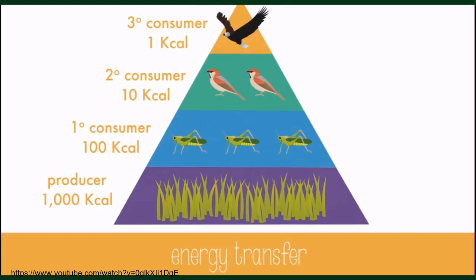The amount of energy transferred from one level to the next is surprisingly small — only about 10% of energy from the previous level is transferred each time. Most energy is lost as heat or metabolic and digestive waste. There are lots of producers at the bottom level to supply the energy needs further up the pyramid. As you go up the pyramid, there will be fewer and fewer organisms that can be supported — that's why there are so few eagles compared to sparrows or grasshoppers in any given ecosystem.